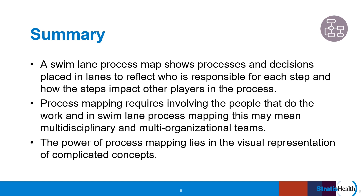In summary, a swim lane process map shows processes and decisions placed in lanes that depict who is responsible for each step as the process progresses over time. This allows people to see how their role and responsibilities fit within the system's other moving parts and shows handoffs occurring along the way. Key steps include being clear about the scope of the process, involving the people that do the work, identifying the lanes such as roles, departments, or organizations, mapping the work and decision points using standard flowchart symbols, noting opportunities for potential discussion, verifying your process map is accurate, and saving it for future reference.